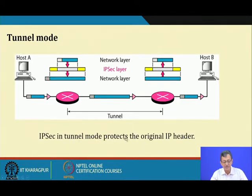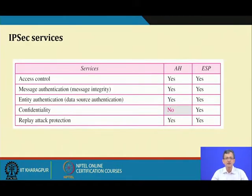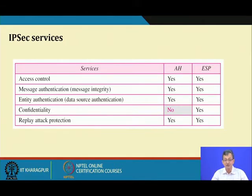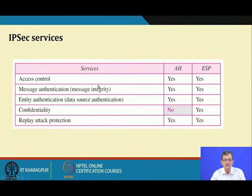In IPSec tunnel mode, the original IP header is wrapped with a new IP header, so that is also protected. A virtual tunnel is formed between the two parties. Some mutable fields such as source and destination addresses must be handled in the new IP header. IPSec provides services including access control, message authentication and integrity, entity authenticity, confidentiality, and replay attack protection. There are two types of IPSec headers: AH (Authentication Header) and ESP (Encapsulating Security Payload).